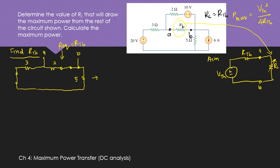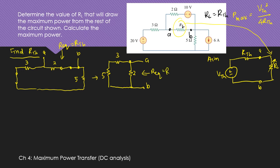You can redraw the circuit: 3 ohms at terminal A, 2 ohms, terminal B, and 5 ohms. The 5 ohms and 3 ohms are in series, so you add them, then do the parallel combination with the 2 ohms. This gives RTH equal to 1.6 ohms, which is also equal to RL.